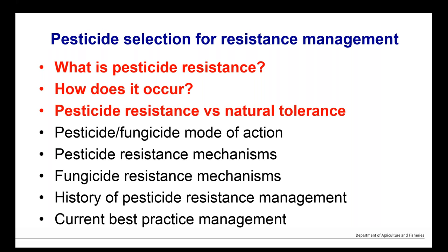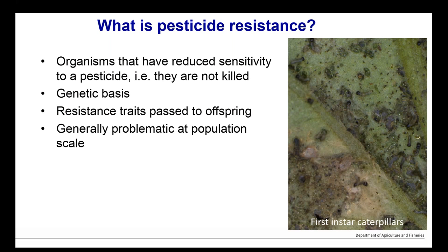This is the overview of our more detailed view of the webinar. We're going to cover: what is pesticide resistance, how it occurs, and some differences you might observe — natural tolerance versus pesticide resistance. Pesticide resistance is basically a reduced sensitivity to a pesticide, meaning pests are not killed. The level of reduced sensitivity at a population level describes the level of pesticide resistance — you can have a high or relatively low level.